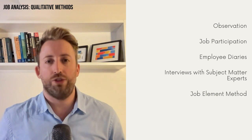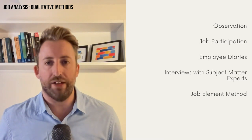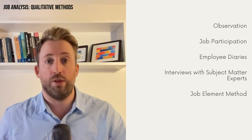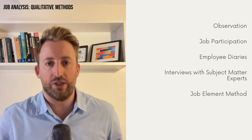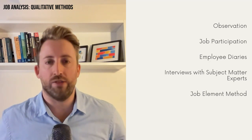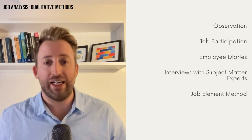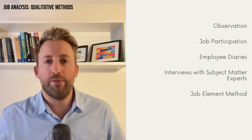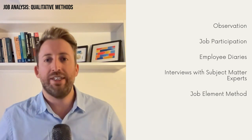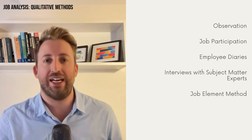Another qualitative approach is the job element method, which is probably the simplest way of conducting a job analysis. This method focuses on gathering information from subject matter experts — those employees who are actually doing the job. Using their input, you identify the knowledge, skills, abilities, and other characteristics required for the job. You'll often come across the acronym KSA, standing for knowledge, skills, and abilities. Sometimes you might see KSAOs, where the O stands for other characteristics, or even KSATIs, where T stands for temperament and I stands for interest.